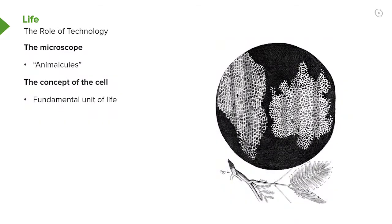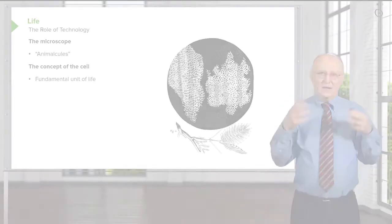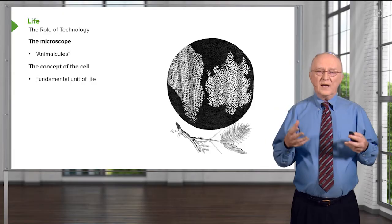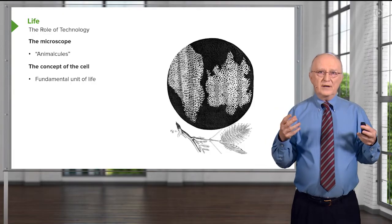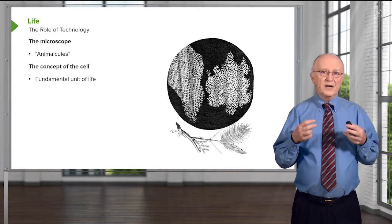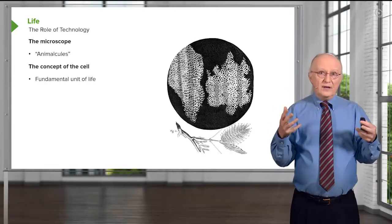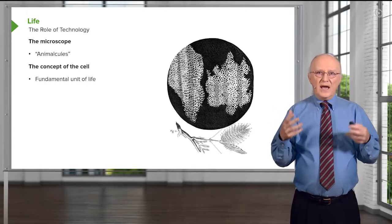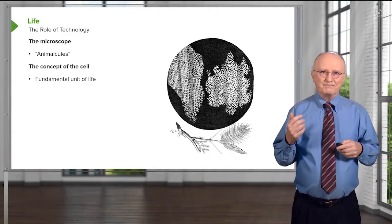Robert Hooke made significant improvements on the van Leeuwenhoek microscope and was able to make some very interesting discoveries, including something that we carry forward today: the cell basis of life. His anatomical drawings of cork, as seen on the screen here, showed individual cells and reminded us that every living cell came from a previously living cell.